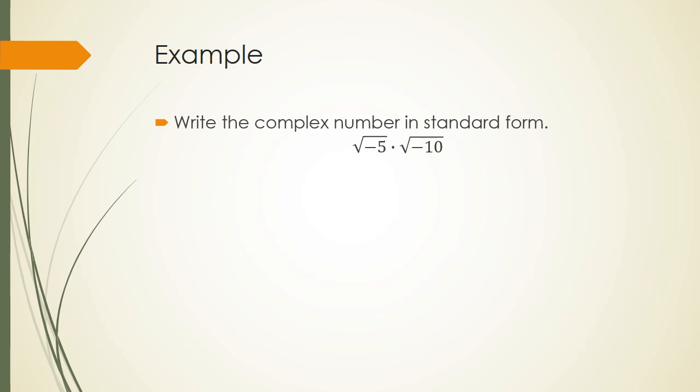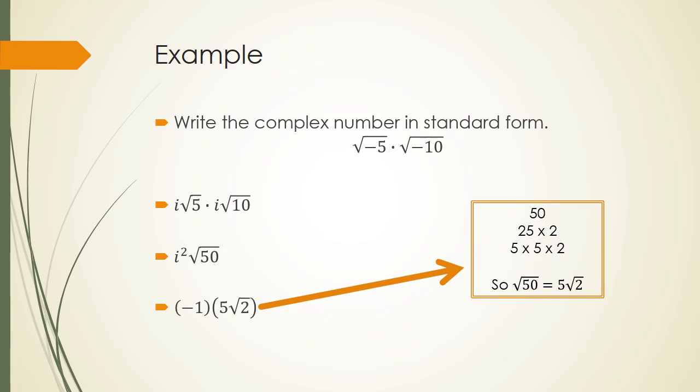All right, let's write this complex number in standard form. Now I'll give you a little hint. You must rewrite these as i times the square root of 5 times i times the square root of 10 first. Pause the recording and try this. Don't forget, we need to break down the 50, and i squared is negative 1. So you have negative 1 times 5 squared of 2, or negative 5 squared of 2. And there on the right, you see how we broke down the 50.